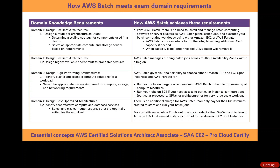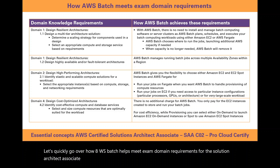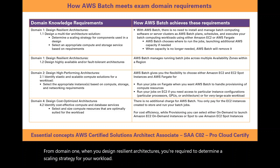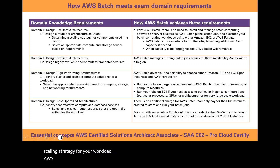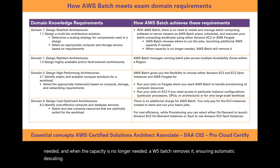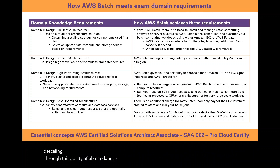Let's quickly go over how AWS Batch helps meet exam domain requirements for the Solutions Architect Associate exam. From domain 1, when you design resilient architectures, you are required to determine a scaling strategy for your workload. AWS Batch automatically chooses where to run the jobs and launches additional AWS capacity if needed, and when the capacity is no longer needed, AWS Batch removes it, ensuring automatic descaling. Through this ability to launch additional capacity and descale capacity, your scaling strategy is met.